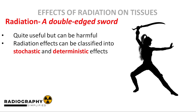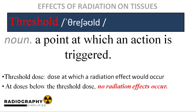There are different ways to classify radiation effects, and we'll explore as many methods of classification as possible. We'll start by classifying radiation effects according to their dependence on a threshold dose. Here, we have stochastic and deterministic effects. Dependence on a threshold dose is what we use to classify effects into deterministic or stochastic effects.